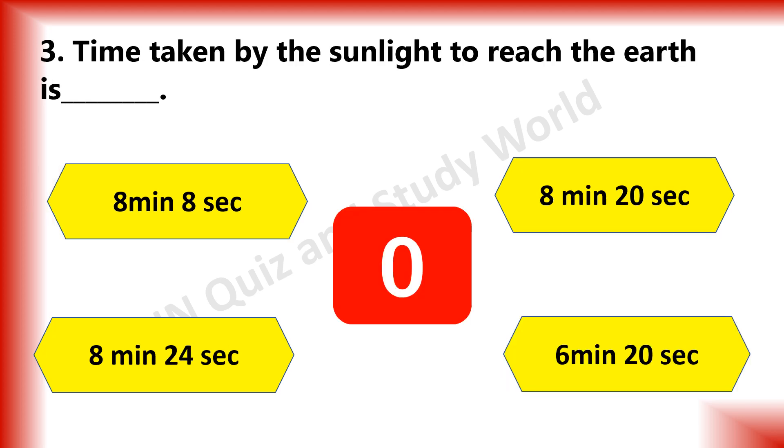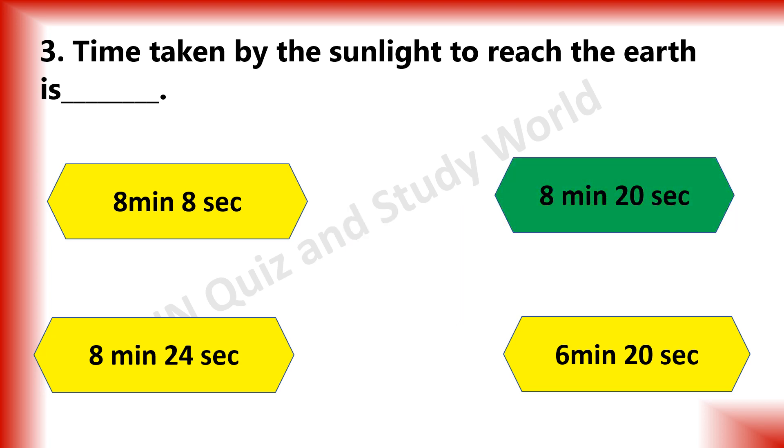What is the time taken by the sunlight to reach the Earth? Is it 8 minutes, 8 seconds, 8 minutes 20 seconds, 8 minutes 24 seconds or 6 minutes 20 seconds? The answer is 8 minutes, 20 seconds.